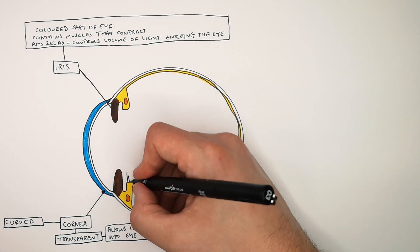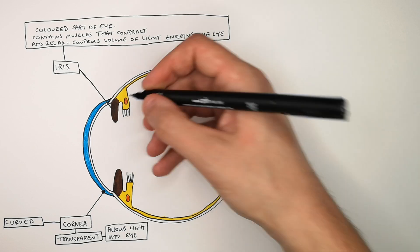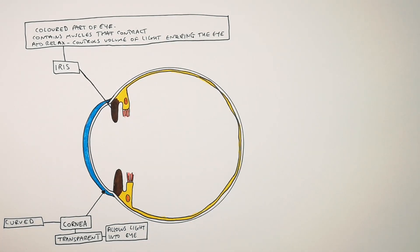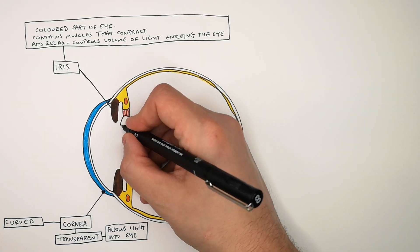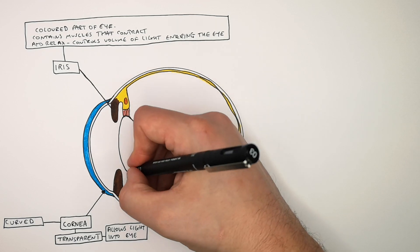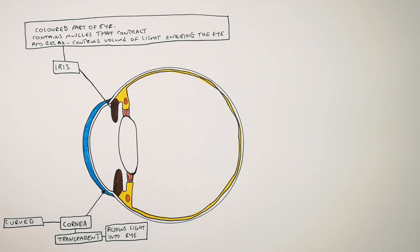Connected to the ciliary muscles are the suspensory ligaments. So I'm now drawing the suspensory ligaments. The suspensory ligaments attach the lens. So the suspensory ligaments connect the lens to the ciliary muscles so they can be controlled by the ciliary muscles.